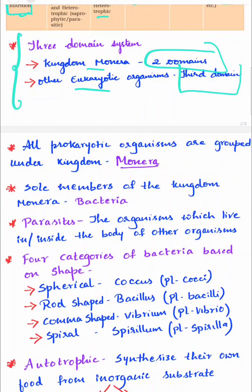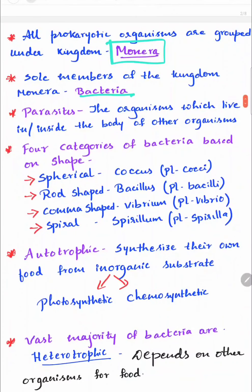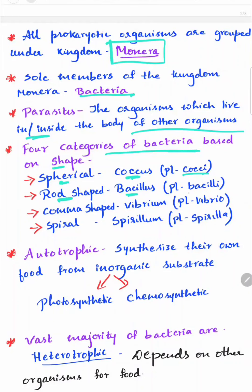All prokaryotic organisms are grouped under kingdom Monera, and the sole members of kingdom Monera are bacteria. There are four categories of bacteria based on shape: spherical shaped coccus (plural cocci), rod shaped bacillus (plural bacilli), comma shaped vibrio, and spiral shaped spirillum (plural spirilla).